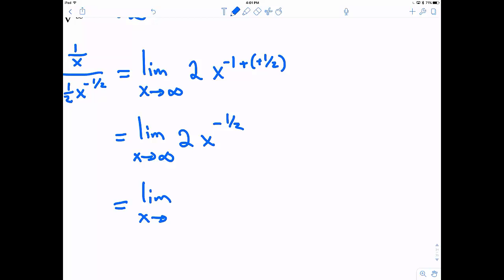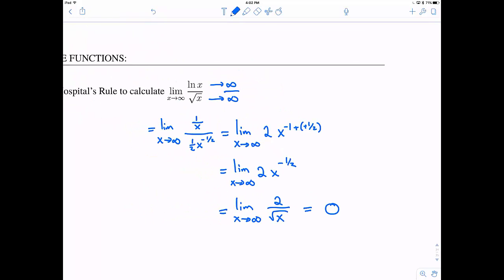Again, just algebra here, so we can rewrite this, limit as x goes to infinity of 2 over root x. So this is going to head towards 0. So as x gets very, very large, this is going to get very, very small. So this is how we can apply L'Hopital's rule.